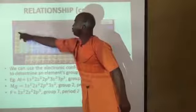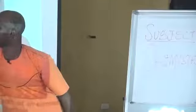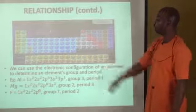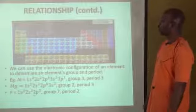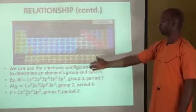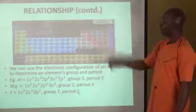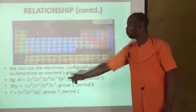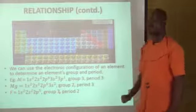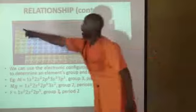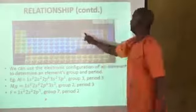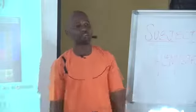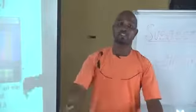Let's look at fluorine. Fluorine is 1s2, 2s2, and 2p5. The outermost shell is 2s and 2p, so fluorine is in period 2. The number of electrons in the outermost shell: 2s has 2 electrons and 2p has 5 electrons, so 2+5 = 7. Fluorine is in group 7. So in an examination, if you are asked to find the group or period of an element, once you can write the electronic configuration, the rest will be as easy as A, B, C.